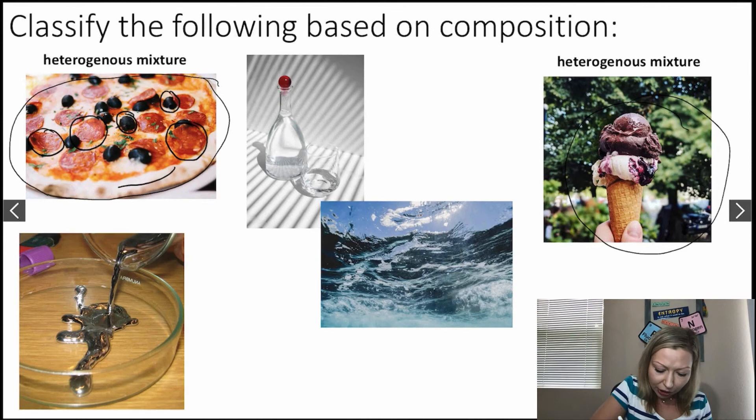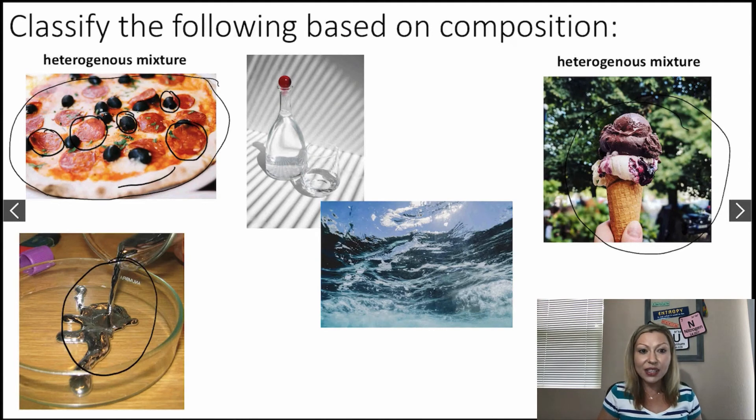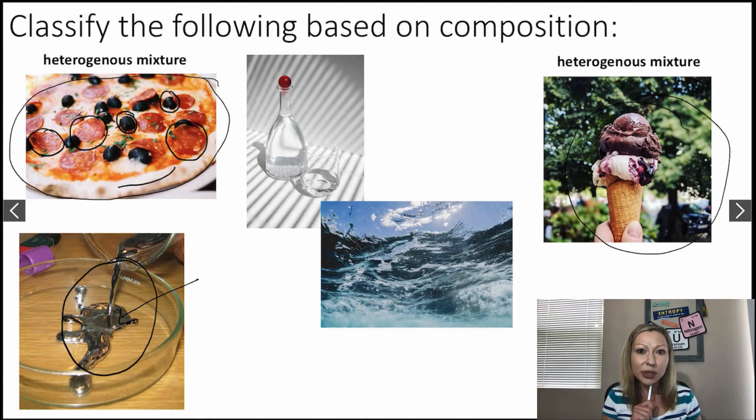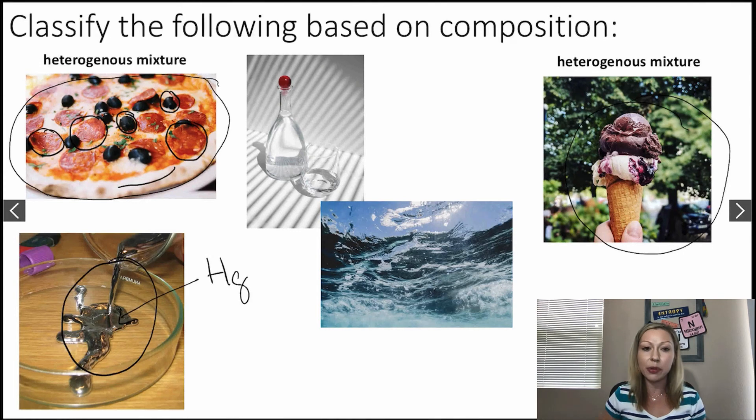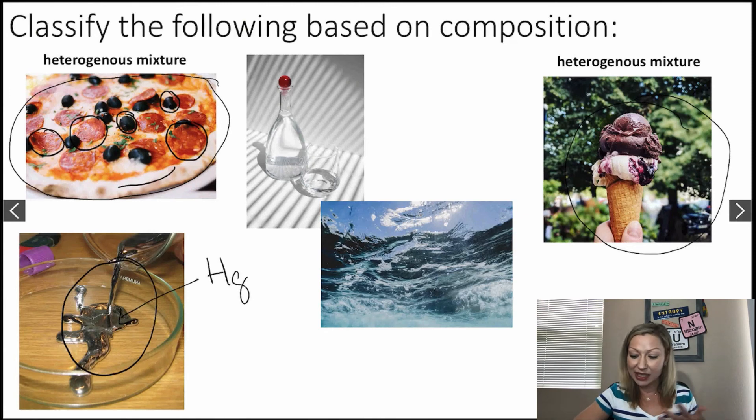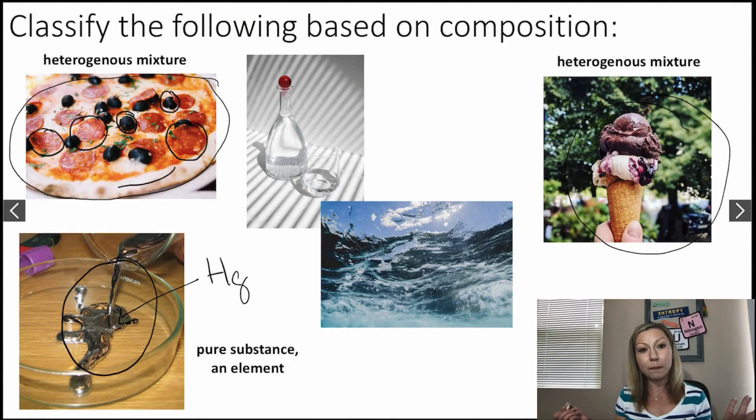All right, let's move on to this picture right here. So that shiny liquid is actually mercury. Okay, so this is mercury. And do you guys know what mercury is? It's not the planet. It's actually an element which has the symbol Hg. Okay, so I just said it's an element. So it's probably a pure substance. Okay, so it is a pure substance, an element named mercury.